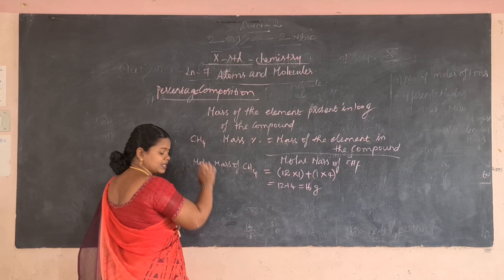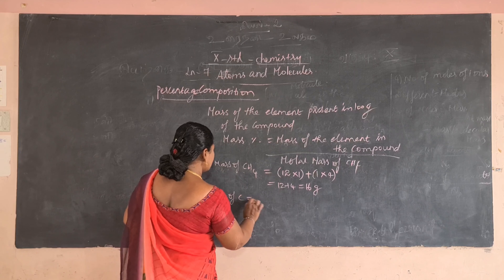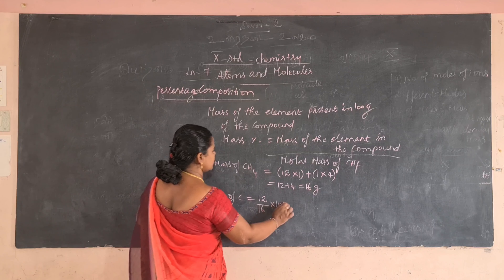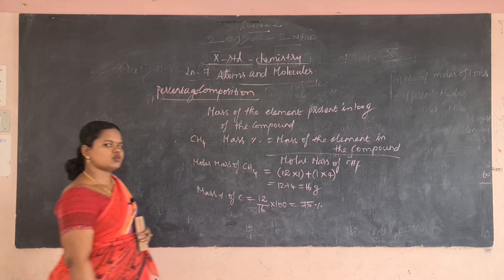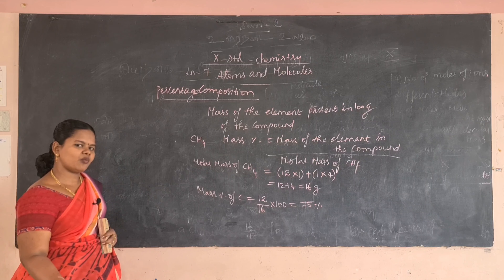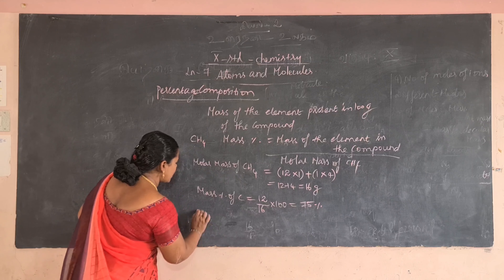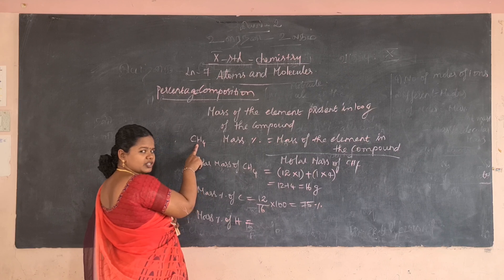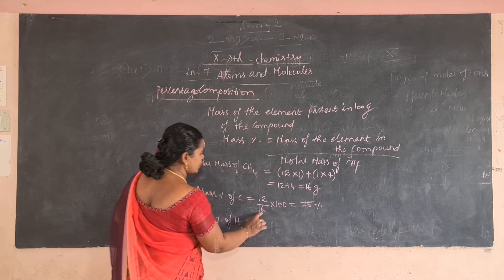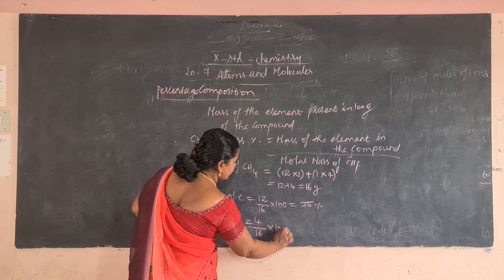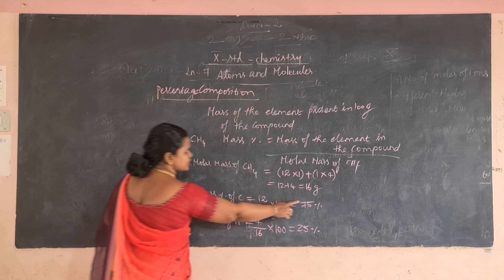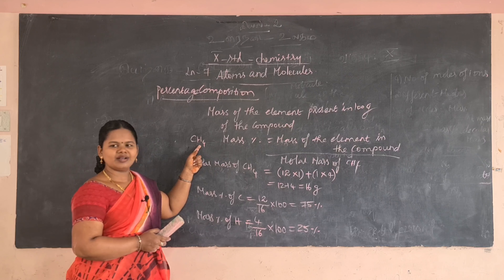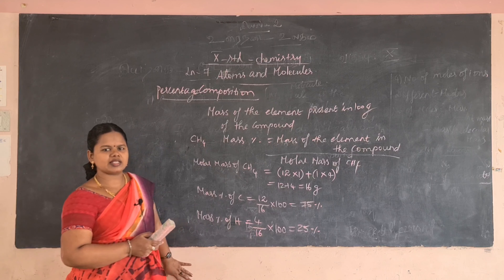Mass percentage of hydrogen in methane = 4 ÷ 16 × 100 = 25%. So 75% + 25% = 100%. Out of 100% of this compound, 75% is carbon and 25% is hydrogen. This is useful in predicting the empirical as well as the molecular formula of the compound.